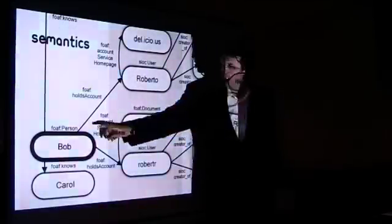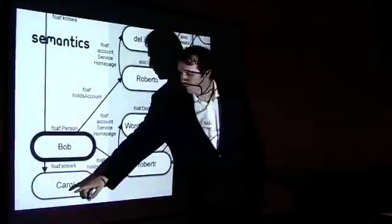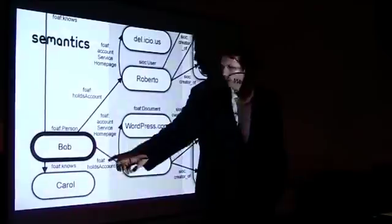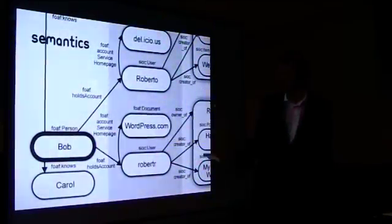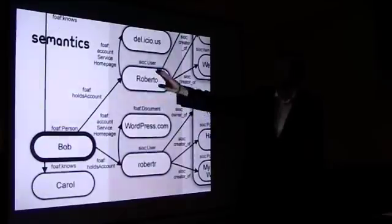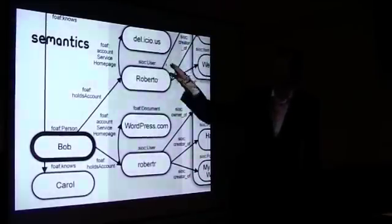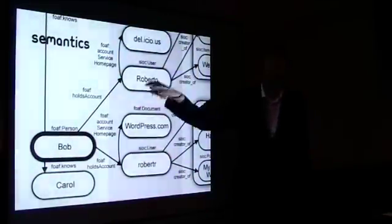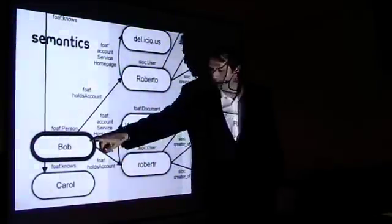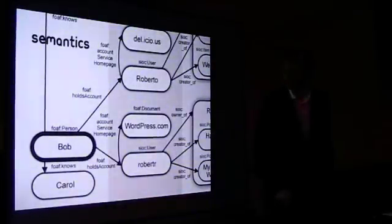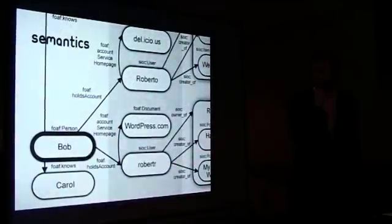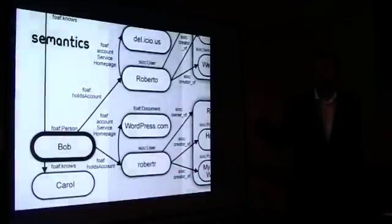And little bits of this graph may come from different places. So maybe this information about Bob and his friends comes from Facebook. Maybe this information about his account on WordPress.com and the blog posts he's created there comes from WordPress. And maybe this information about Delicious and what he's done there comes from Delicious. But they're all connected together because they're all using the same identifiers for Bob, for Carol, for whatever. And that's the kind of idea of the semantic web.